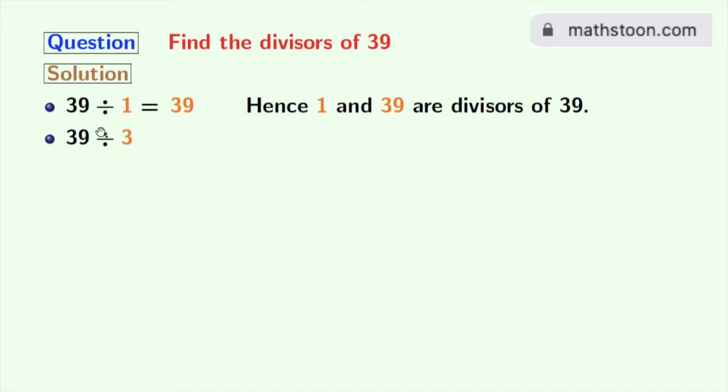And this gives us 13. So, 3 and 13 are the divisors of 39.